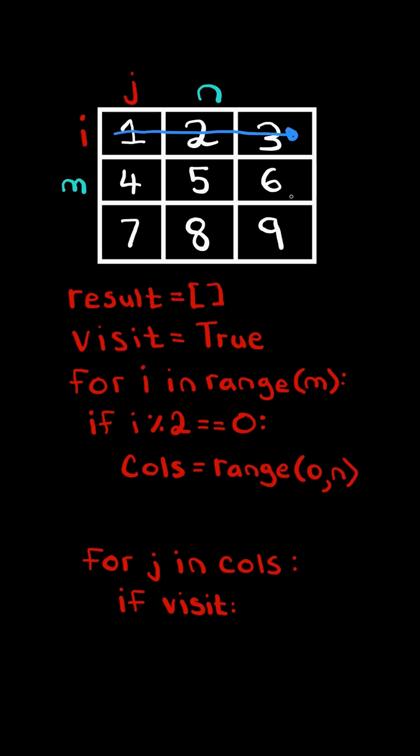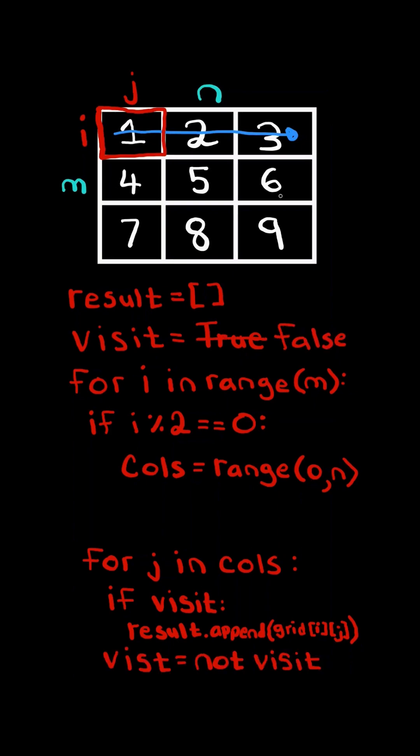We then iterate through the columns of the range we just created, and if the flag visit is true, then we append the number at the index to the list, and then we flip the flag to false. The visit flag is false, so we do not append the number to the list, and we set the flag back to true and continue. The flag is true, so we append it to the list and change the flag back to false. We are now finished iterating through the column, so we advance i to the next row.